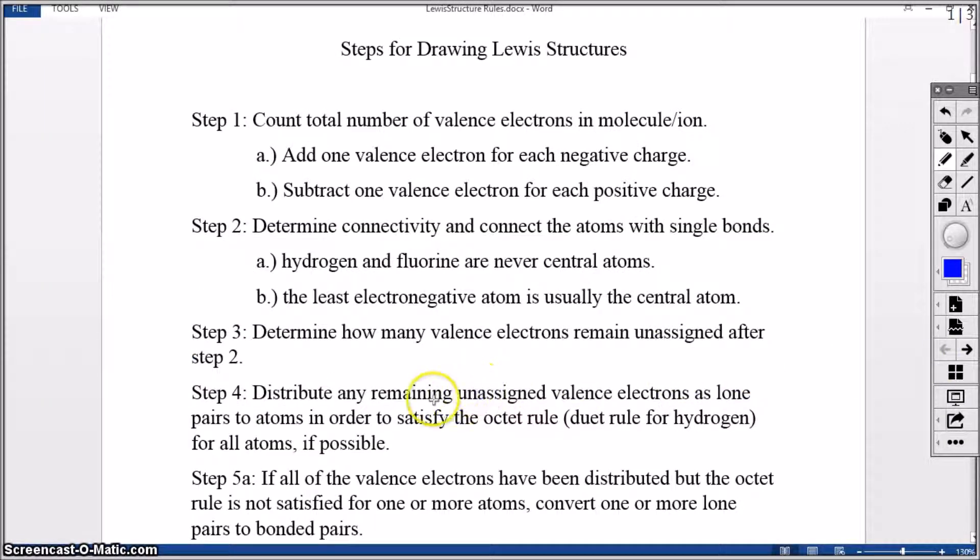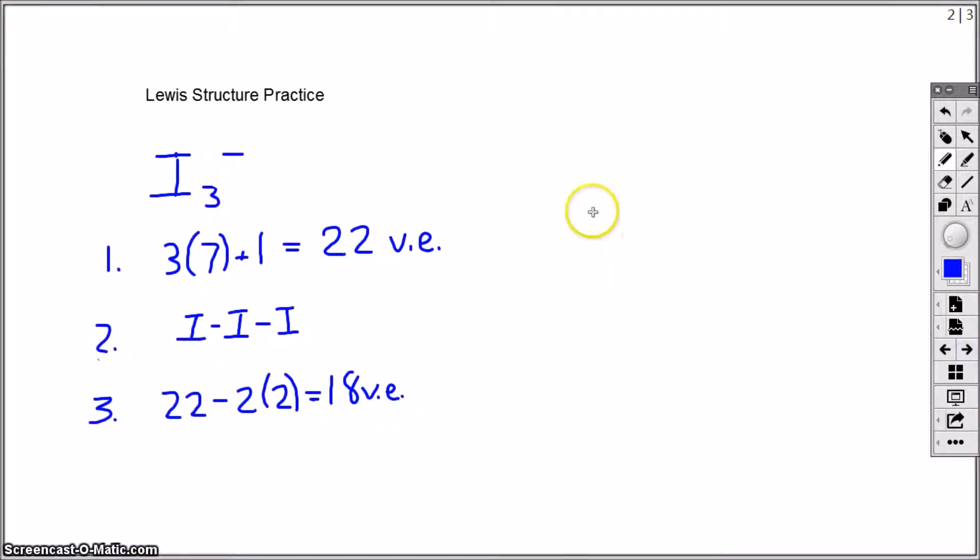In step four, I'm then going to distribute those remaining unassigned valence electrons as lone pairs in order to try to satisfy the octet rule. To begin then, I'm going to start with my structure from step two and take a closer look as to how many valence electrons each atom currently has.